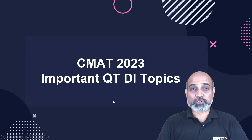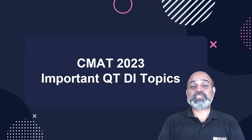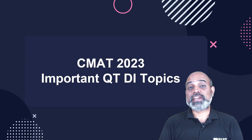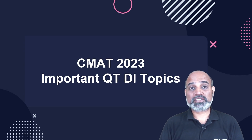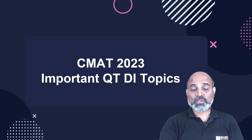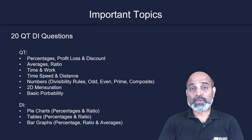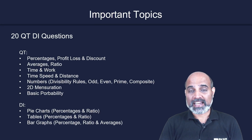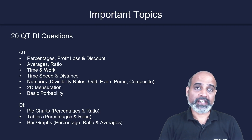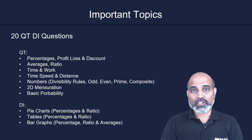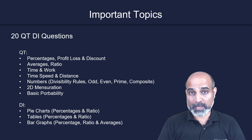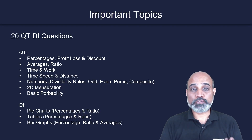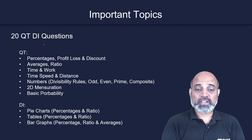I'm going to tell you about CMAT 2023 important QTDI topics. QT stands for quantitative techniques and DI stands for data interpretation. This is the first section of your CMAT paper and it consists of 20 questions overall.